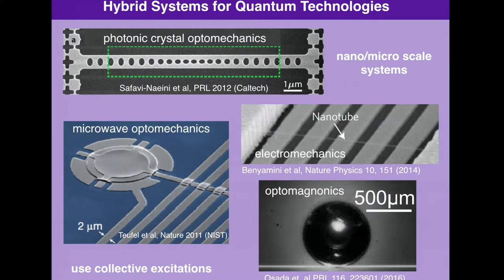These hybrid systems combine different degrees of freedom to perform tasks optimally. I'm showing here a collection of systems being studied nowadays, and they all share a common quality: they are at the micro or nano scale, and they use collective excitations. For example, here is a picture of a photonic crystal where light couples through vibrations. The last picture is a very new addition: optomagnonic systems, in which light couples to magnetic excitations.